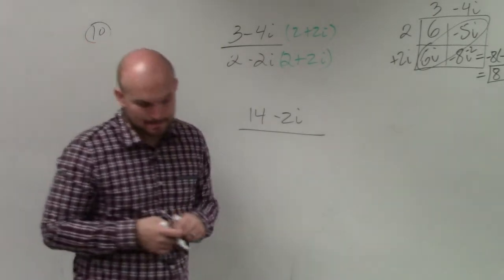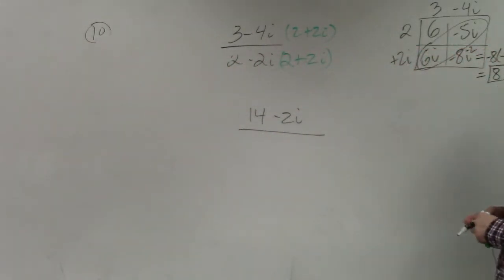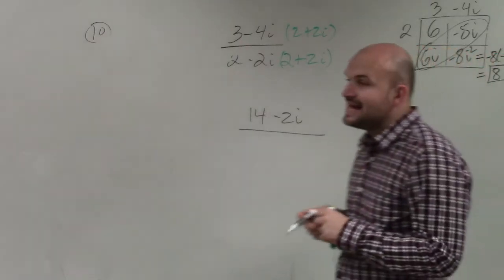Yep? So 2 times 3 is 6. And you over 1 is 2 times negative 4i. How is it? 2 times negative 4i is negative 8i. Oh, no, it's negative 8. Then...